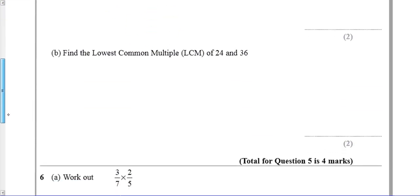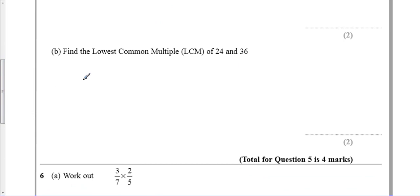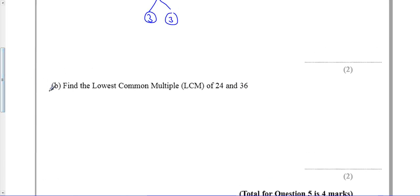Coming down, it asks us to find the lowest common multiple of 24 and 36. Well, I knew that 36 is 2 squared times 3 squared. I could do the same thing for 24.